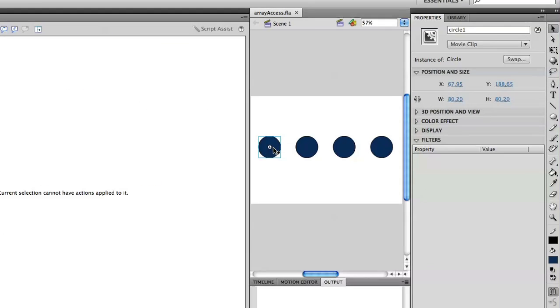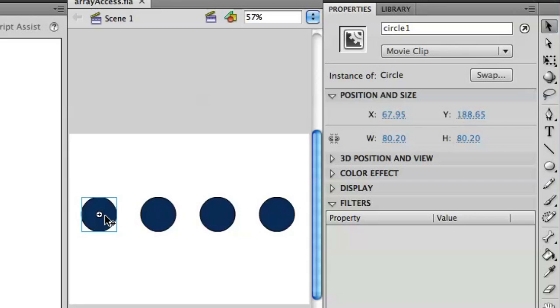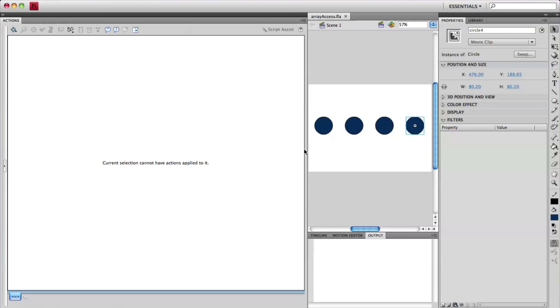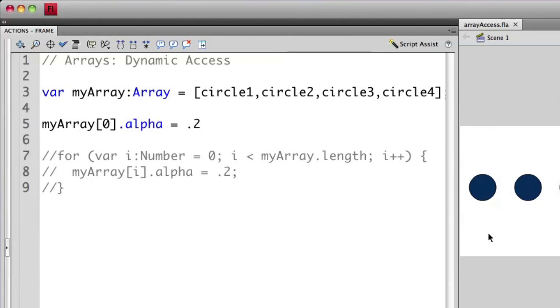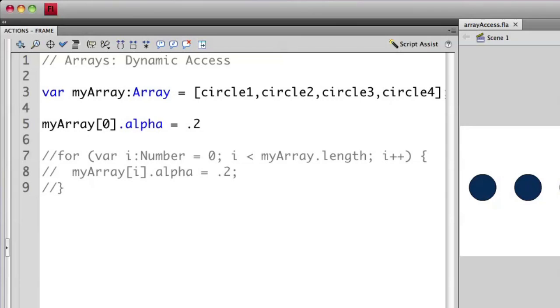On the stage, I have four objects here - they're four circles, each named circle1, circle2, circle3, and circle4. If I want to access each one of these items in an array, I can actually build an array using these instance names. So on line 3, I now have an array called myArray, and I'm using the actual instance names of these objects that are on the stage: circle1, circle2, circle3, and circle4.